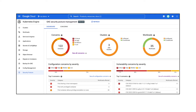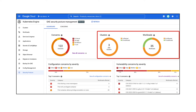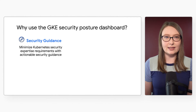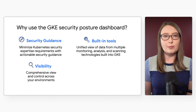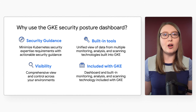In the dashboard, you'll notice a variety of information about the security posture of your clusters and workloads. The charts give you a quick look at security across your clusters, including things like the severity of security concerns, the types of security concerns, and what proportion of your clusters and workloads are affected. The GKE security posture dashboard gives you opinionated Kubernetes security built into GKE, providing best practice actionable security guidance. It shows you results from multiple monitoring, analysis, and scanning technologies built into GKE, providing visibility so you can understand your overall security posture at a glance. These tools and the dashboard are all included with GKE.